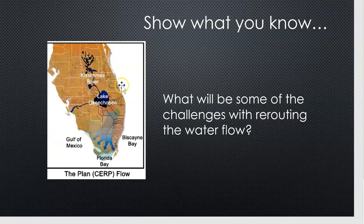Here's a chance to show what you know about human impact. We've said that we want to reflood these areas and change that water flow to be more similar to what we originally had. What are going to be some challenges that we face in rerouting that water flow? I want you to think long and hard about the urbanization that has occurred and talk to me about the challenges with rerouting that water flow. Show what you know — good luck.